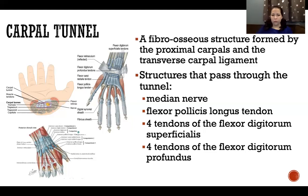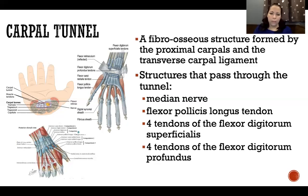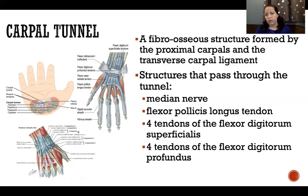Because so many structures pass through that very narrow tunnel, anything that encroaches on that space can potentially impinge the median nerve — that's where carpal tunnel syndrome comes in. Carpal tunnel syndrome is entrapment of the median nerve specifically at the location of the carpal tunnel. This is different from entrapping the median nerve at the elbow or shoulder, which might produce the same hand symptoms but would not be carpal tunnel syndrome.